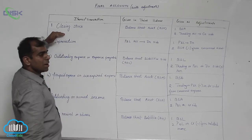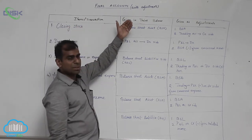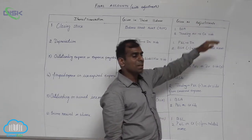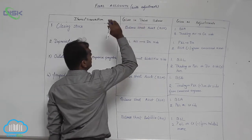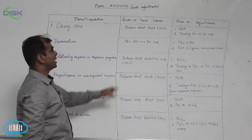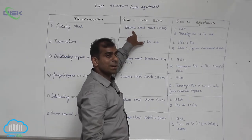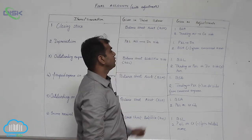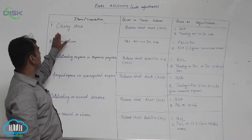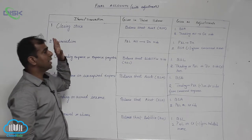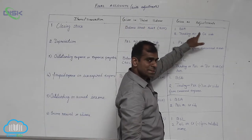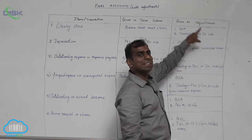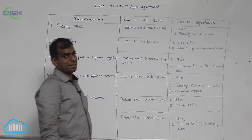For closing stock, you may see it in trial balance or as adjustment. When closing stock appears in trial balance, you will give it only one treatment: record it on the balance sheet asset side (BSA). If closing stock is given as adjustment, you will record it on the balance sheet asset side once, and also record it in the trading account on the credit side, completing the double entry of one debit and one credit.